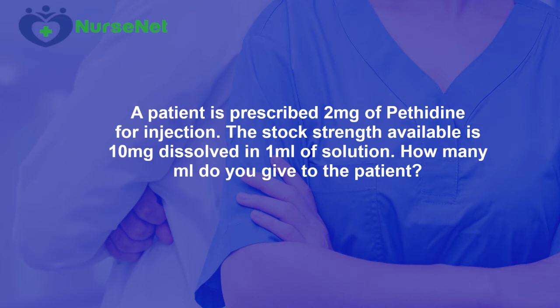Welcome to NurseNet. In this video we're going to work out how we can calculate volumes for an injection. The patient has been prescribed 2mg of pethidine. The stock strength you have is 10mg in 1ml of solution. How many millilitres do you give to the patient?